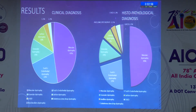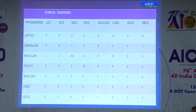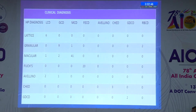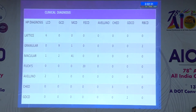All three cases of Avellino dystrophy were misdiagnosed. Avellino dystrophy was diagnosed in two eyes as lattice corneal dystrophy and as granular corneal dystrophy in one eye. Granular corneal dystrophy was misdiagnosed as macular in one eye and Reis-Bücklers in two eyes. Macular was misdiagnosed as lattice in one eye and granular corneal dystrophy in two eyes. This is because Avellino dystrophy shows features of both lattice and granular dystrophy, and there is a clinical overlap in the presentation of granular and macular corneal dystrophies.